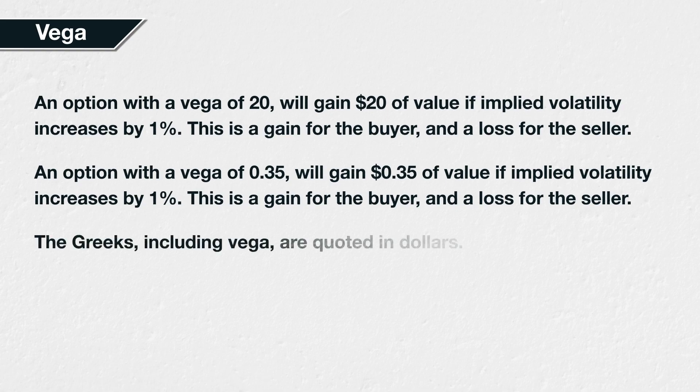Vega is stated as a dollar amount, i.e. the amount of dollars the option price is expected to increase by if implied volatility increases by 1%, assuming all else remains constant. Even on the Deribit platform, where the option premiums are paid and received in amounts of cryptocurrency, the Greeks, including Vega, are quoted in their dollar amounts, as calculated by the Black-Scholes option pricing model.